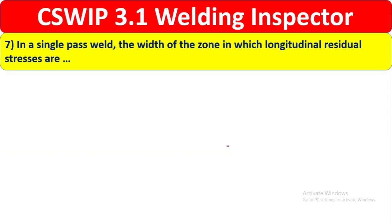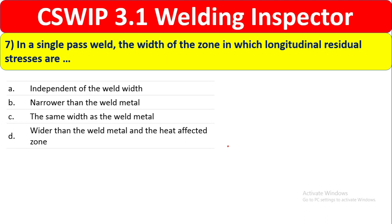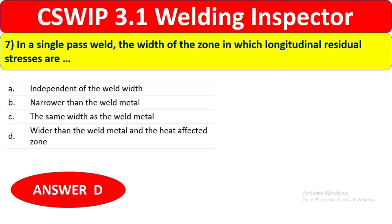Question 7: In a single-pass weld, the width of the zone in which longitudinal residual stress exists is — narrower than the weld metal, the same width, wider than the weld metal, or the heat affected zone? In a single-pass weld, the zone of longitudinal residual stress is wider than the weld metal and the heat affected zone. The correct answer is Option C: wider than the weld metal.